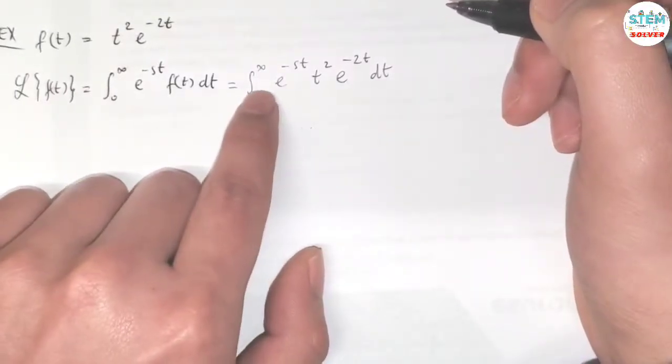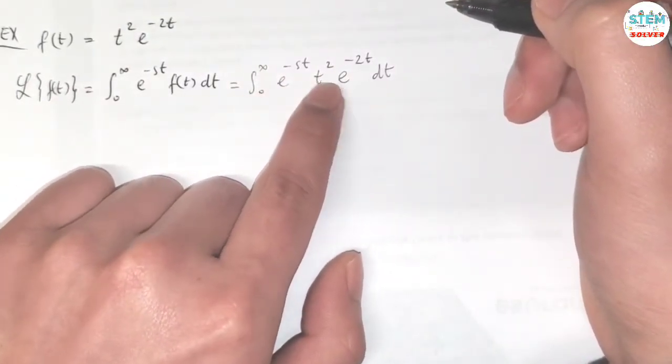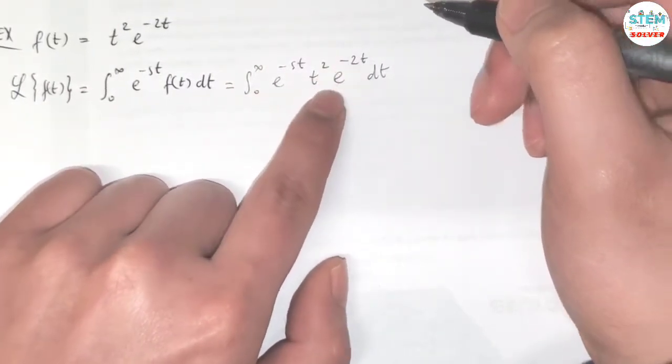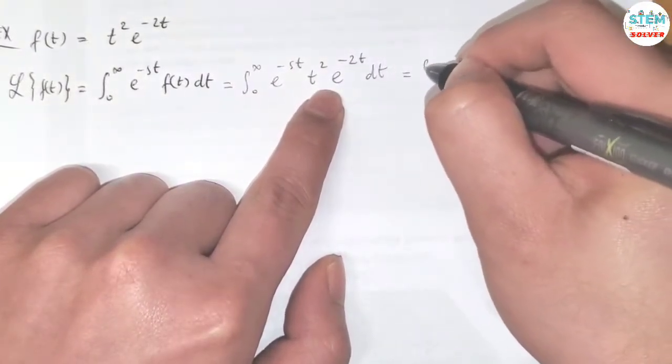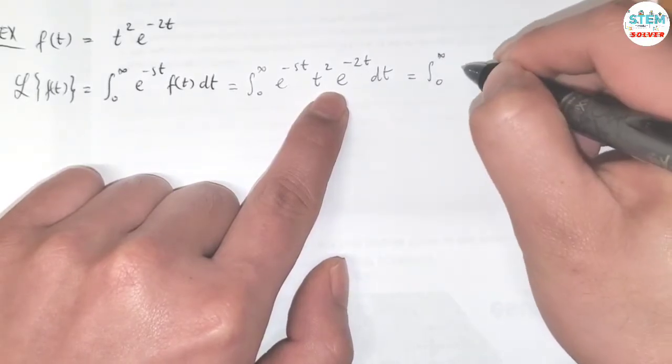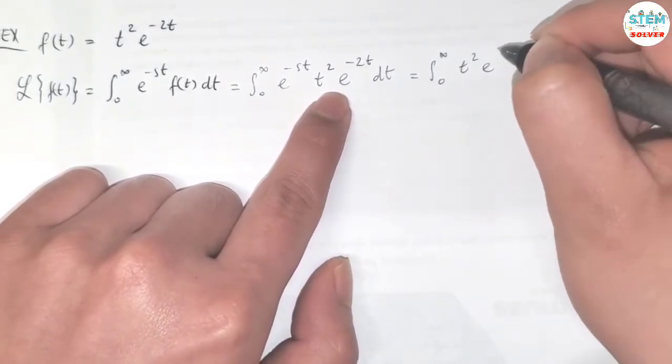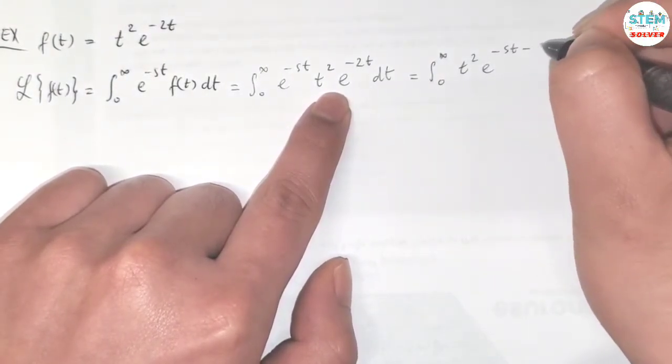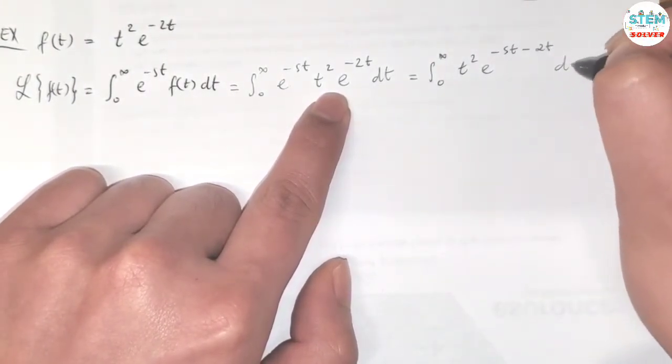So we have e to the same base, so we add the exponents together, which gives us e to the negative s times t minus 2t, dt.